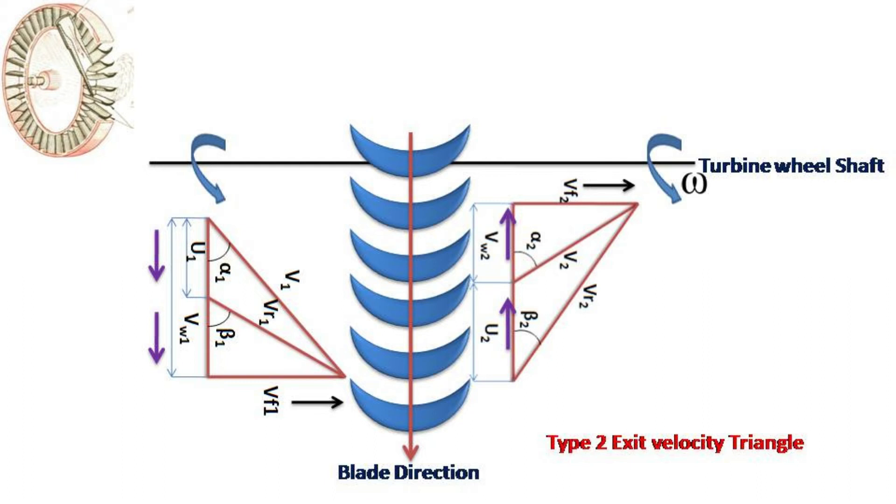The flow velocities vf1 and vf2 are parallel to the axis of the wheel and perpendicular to the blade movement and are in the same direction in both the cases, i.e., from left to right.